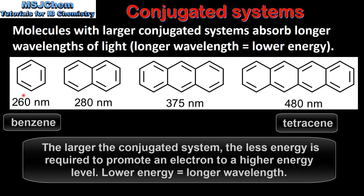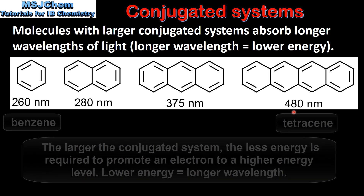Here we have four molecules with conjugated systems. The size of the conjugated systems increases from left to right. Benzene, with the smallest conjugated system, absorbs the shortest wavelength of light. Tetracene, with the largest conjugated system, absorbs the longest wavelength of light.